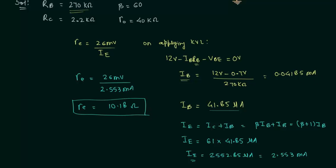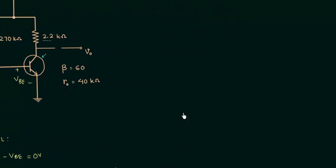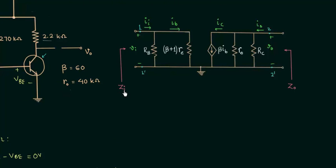Now we can calculate the input and output impedances, which is the first part of the problem. To do so, we obtain the AC equivalent circuit and replace the transistor with its RE equivalent model. The input impedance is the impedance seen from terminals 1 and 1', and it is equal to RB connected in parallel with (beta + 1) × RE'.